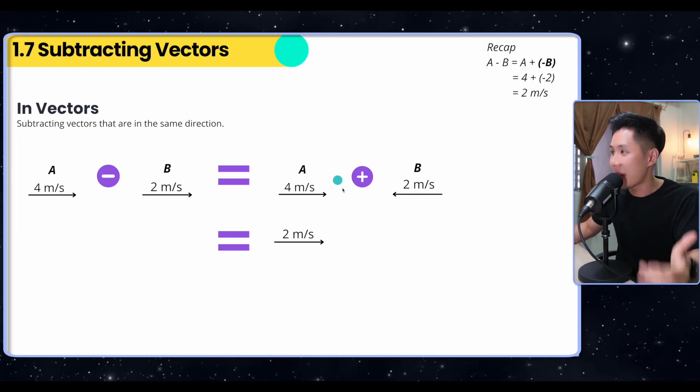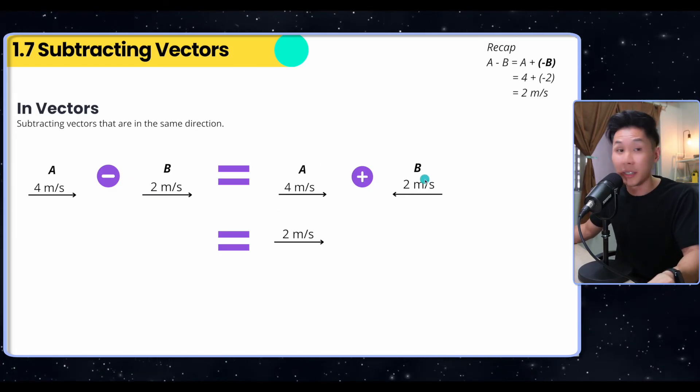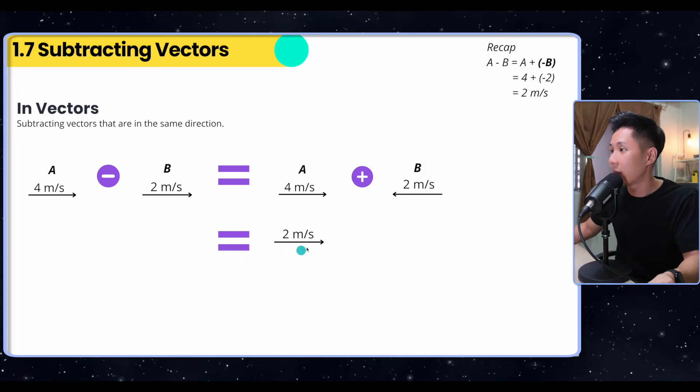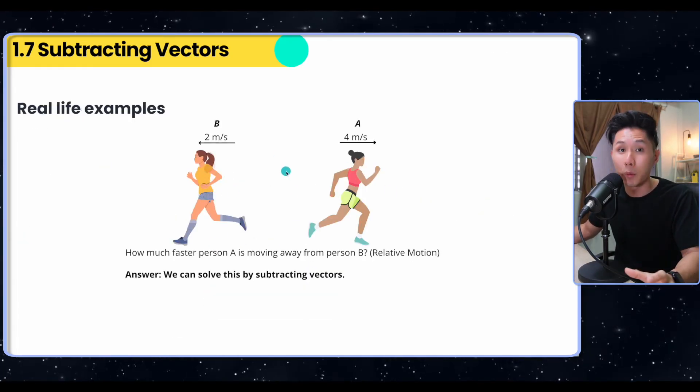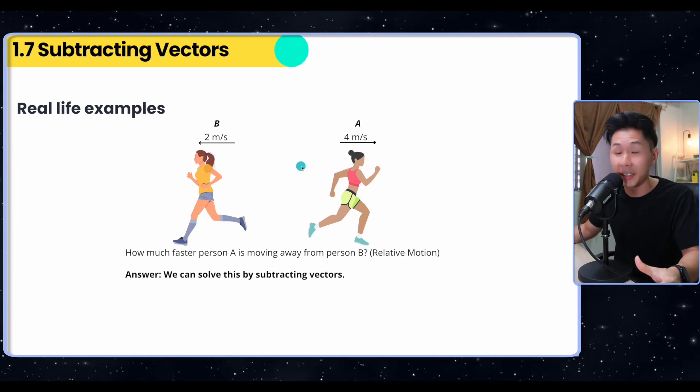That's one use case of subtracting vectors, when things come in handy. When we're minusing the velocity, what we are doing is we are adding the same velocity but in a different direction. That's how fast woman A is moving away from woman B.